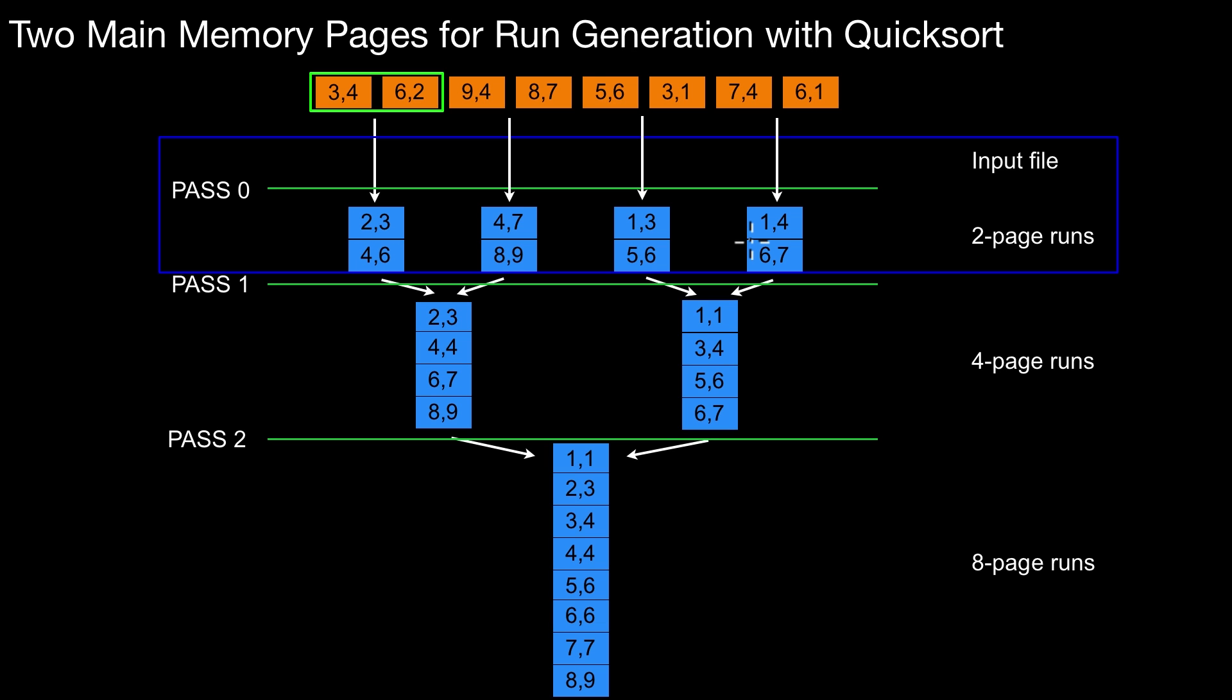Obviously this could be done by increasing the available main memory. However, if that is not possible, what can we do? Well, there is an interesting algorithm that allows us to generate runs that are larger than the available main memory.